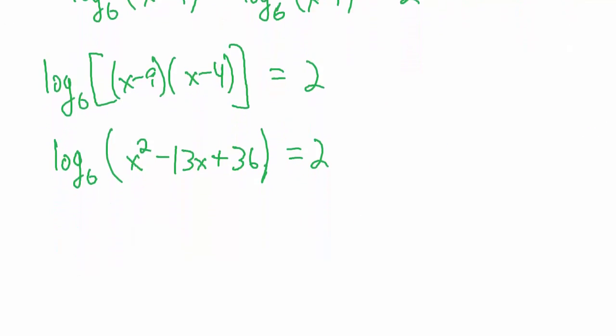So now what we do is convert this to its equivalent exponential form. So if we have the base 6 log of x squared minus 13x plus 36 equals 2, that's the same thing as saying exponentially x squared minus 13x plus 36 equals base 6 raised to the power 2.